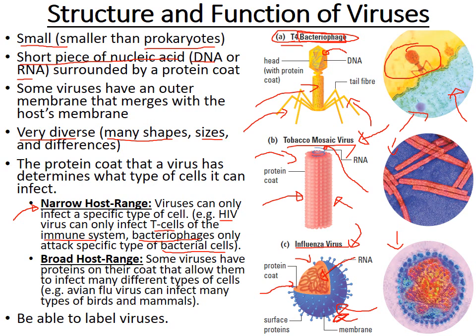Some viruses have a broad host range, meaning they can infect many different types of cells. For example, the avian flu virus can infect many different types of birds and mammals. You should be able to identify and label these viruses. The inside genetic material is the DNA or RNA, and the rest is generally protein coat — sometimes with specific structures like tail fibers or a head region.